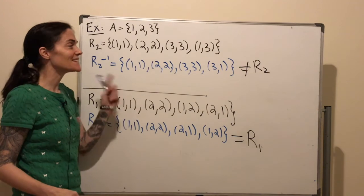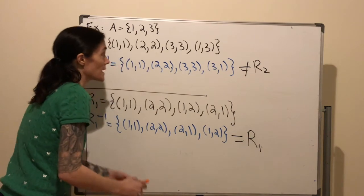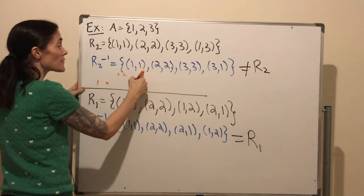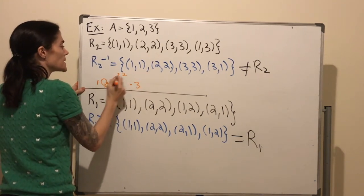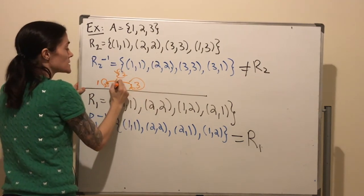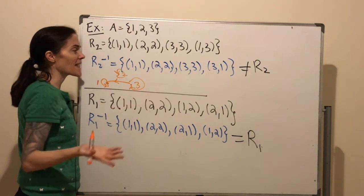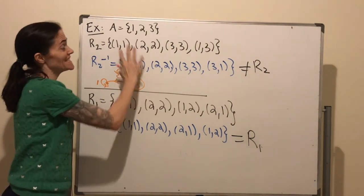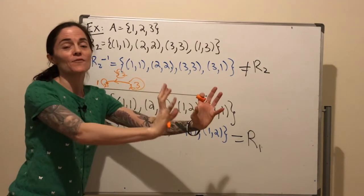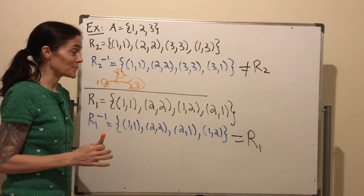What happens with the diagrams? For R1 the diagram stays the same. For R2 inverse: we have 1, 2, 3 with the same loops, but the arrow between 1 and 3 is now reversed — it goes the other way. For R2, that arrow went one way; for R2 inverse, it's flipped. Generally, if you have the diagram for R and want the diagram for R inverse, you just reverse the direction of all the arrows.